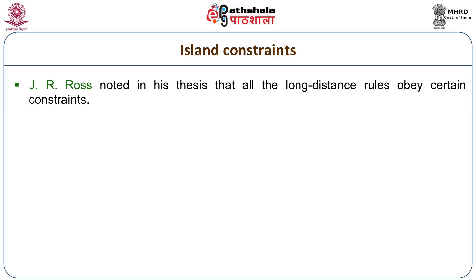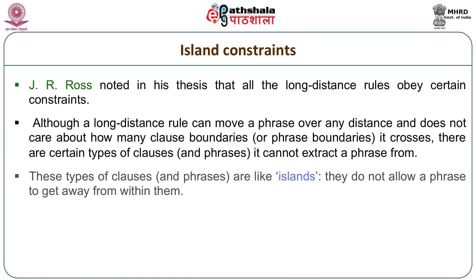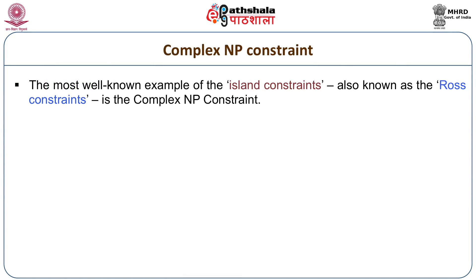What Robert Ross did in his dissertation was to study certain properties of these long-distance rules. He found that there were certain syntactic configurations from within which a phrase could not be moved out. These syntactic configurations he called islands, and these constraints came to be called island constraints — sometimes also referred to as Ross constraints. The most well-known Ross constraint is the Complex NP Constraint.